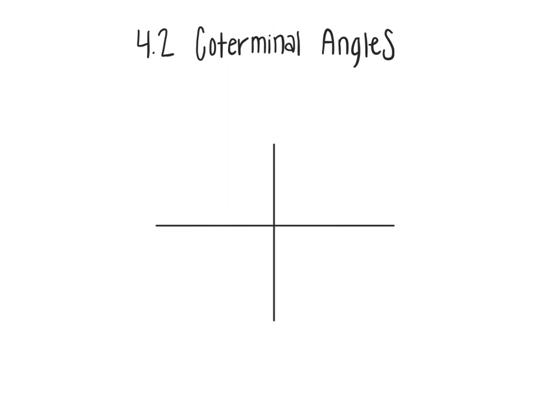Today we're going to talk about coterminal angles. The picture shown on the screen is a simple quadrant plane with an x and y axis, the same exact thing that you use to graph an equation. What we'll be using this quadrant plane for is making angles, so this is leading into the unit circle.